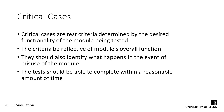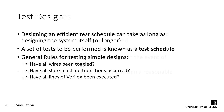The test criteria can also include conditions reflective of the module being misused, so designers can idiot-proof their systems. For example, checking what happens in a divider unit if the system attempts to divide by zero. As mentioned previously, the design of a robust test schedule can easily take as long as the design of the system to be tested itself.